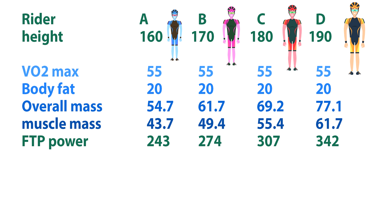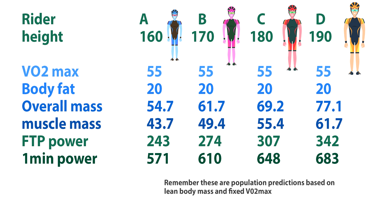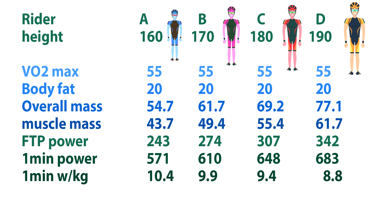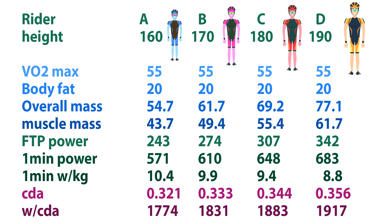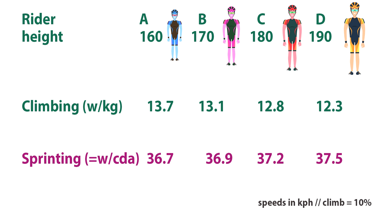Multiplying by a convenient constant, I get around 243 watts FTP for the short rider and 342 watts for the tall rider — the difference in power scaling according to height. For sprint or one-minute power, I get 570 watts for the short rider and 682 for the tall rider. With these steps, we can work out watts over CDA, which is the predominant effect when cycling on the flat. I get 1774 for the short rider and 1916 for the tall rider, which means on the flat the tall rider has an advantage — around 37.5 km/h versus 36.7 km/h for the short rider.